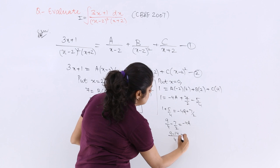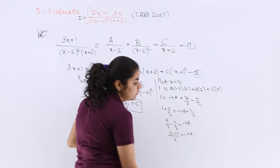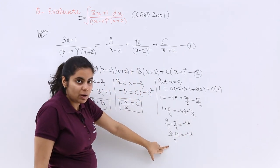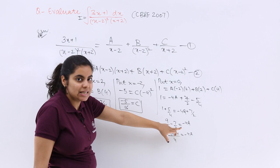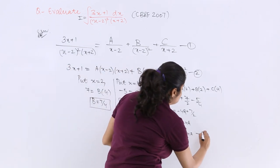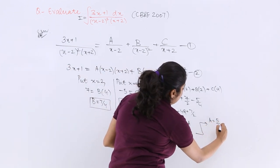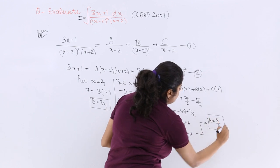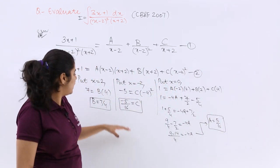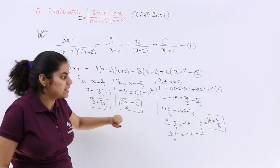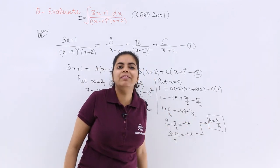9 minus 14 is equal to minus 4A. So minus 5 upon 4, minus and minus getting cancelled, so it is 5 upon 16 is A. So A is equal to 5 upon 16. So see, I have the values of B, I have the values of C, and now also I have the value of A.